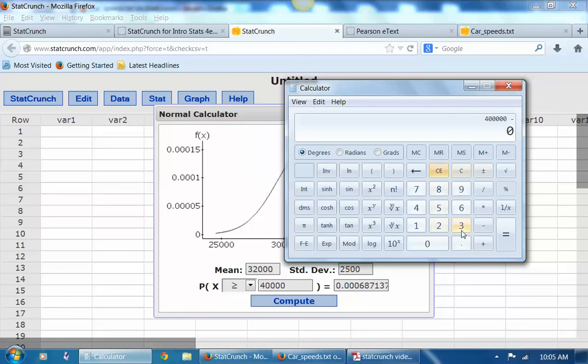Let's pull our calculator up again. So we're doing 40,000 miles minus 32,000 miles, and then divide by 2,500. So 3.2 standard deviations above the mean. That's pretty unusual.